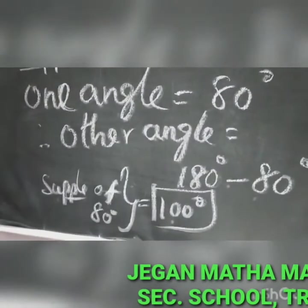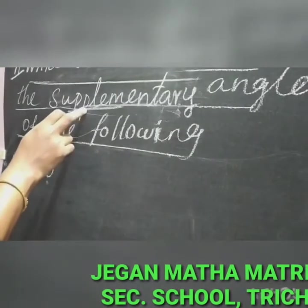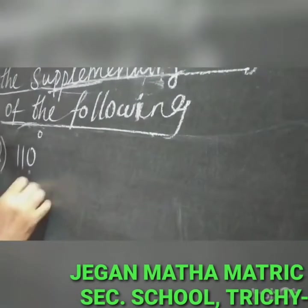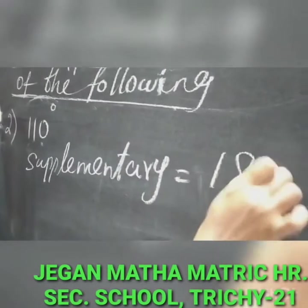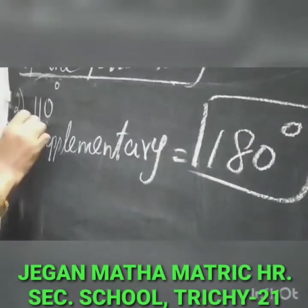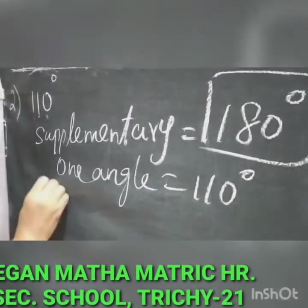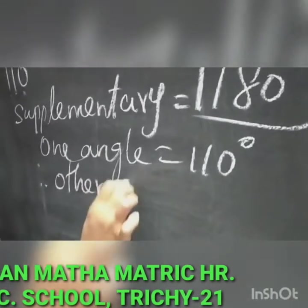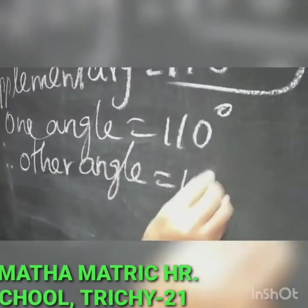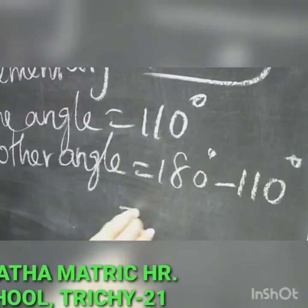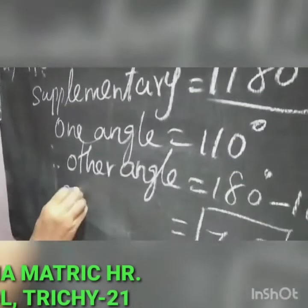Now the second sum: the given angle is 110 degrees. You have to find the supplementary of 110 degrees. First write the total — supplementary angles, pair of two angles, equals 180 degrees. One angle equals 110 degrees, so to find the other angle you subtract: 180 minus 110, which gives balance 70 degrees.